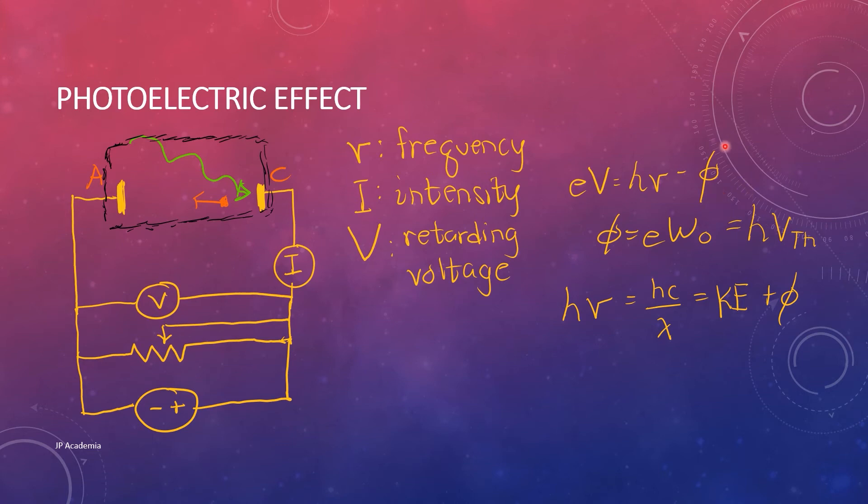We have this phi, the work function, and this can be expressed as E w0. We can also equate this to h nu, wherein we have this nu sub th here, which is the threshold frequency. Below this threshold frequency, those incident or incoming photons will not have sufficient energy to release even the least tightly bound electrons, no matter how intense that light is.